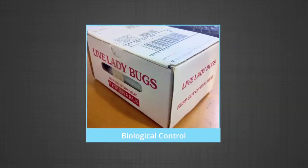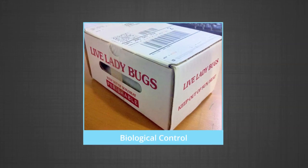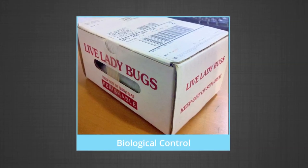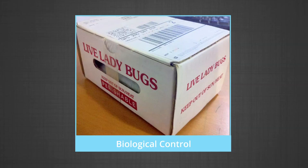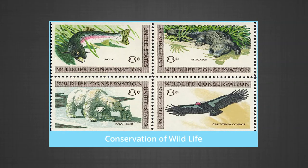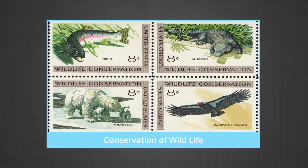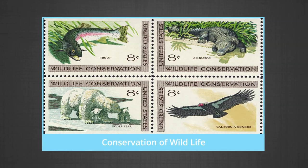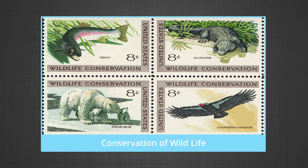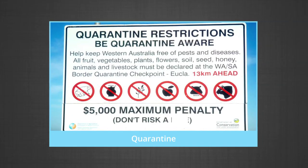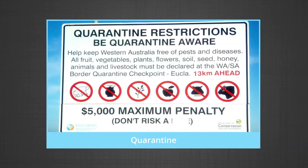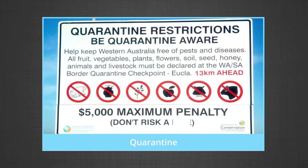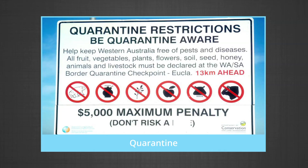Biological control: taxonomic knowledge is essential for accurate identification of pests and pathogens. Nowadays, instead of insecticides — which is chemical control — natural enemies of pests are introduced for biological control. Conservation of wildlife: due to human greed and ignorance, many species of flora and fauna have gone extinct. Taxonomists help to identify endangered species and help in initiating wildlife conservation programs. The spreading of new pests and diseases from one country to another through infected humans can be restricted through quarantine, by checking and establishing quarantine laboratories at airports, seaports, and railway stations.